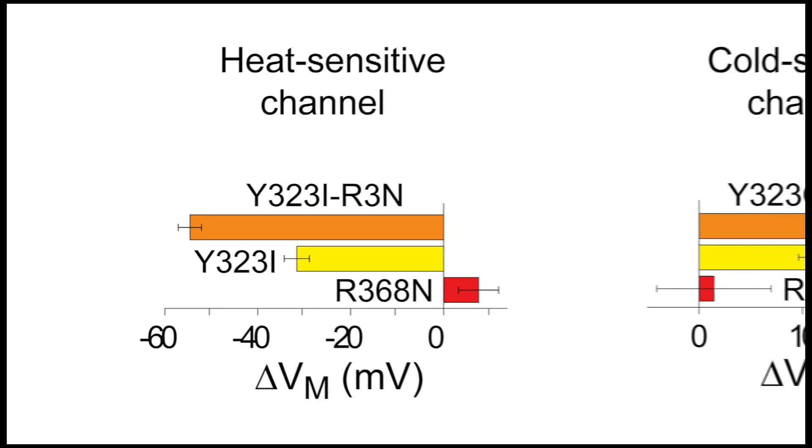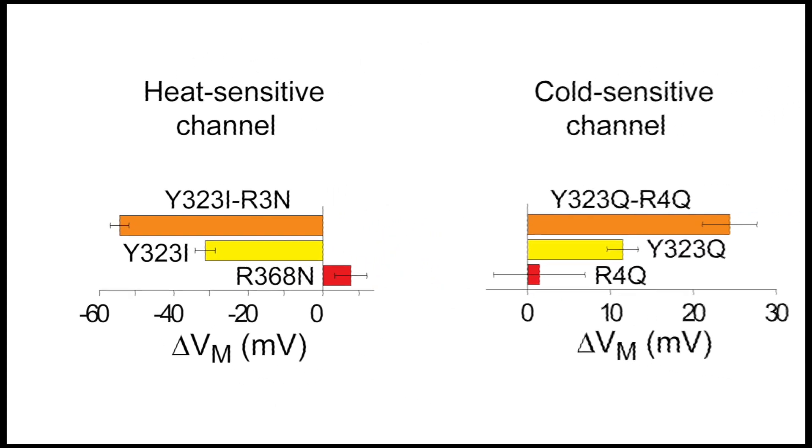We observed this also for other mutants, including a cold-sensitive channel. Our study, for the first time, establishes a plausible molecular mechanism that underlies temperature sensitivity in ion channels. It suggests that the temperature sensor may not be a specific domain, but may arise from sites that are distributed throughout the channel — especially the ones that are undergoing changes in solvation during the gating process. This is very different from how one thinks about canonical allosteric systems, where there is a well-defined sensor domain that communicates with the active site.